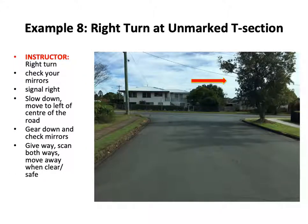Example eight: right turn at unmarked T section. Right turn, please. Check your mirrors, signal right, slow down, move to the left of the centre of the road, gear down, check mirrors, give way, scan both ways, move away when clear to do so.